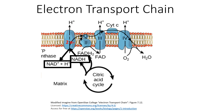If you remember, within NADH there is one electron and then a hydrogen which has an electron within it. What complex one does is it takes the one electron plus the additional electron from the hydrogen, and it leaves the remainder of the hydrogen — which is now a hydrogen ion, or a proton — within the matrix.